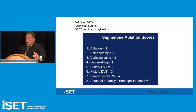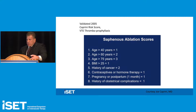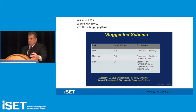For example, a saphenous ablation is minor surgery — one point. Leg swelling is only one point; history of venous thromboembolic events gives three points as does family history. Obesity is only one point, and cancer history is two points. Based on your total score — low, moderate, or high risk — you guide your prophylaxis accordingly: compression, compression plus pharmacotherapy, or compression, pharmacotherapy, and strict surveillance.